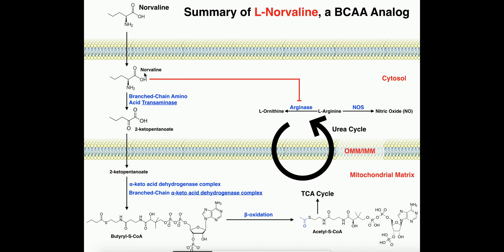That's the rationale for taking a norvaline supplement. It's less about catabolism, even though it can be used to produce energy. Norvaline's major use as an ergogenic aid is inhibition of arginase, which preserves arginine and makes more available for nitric oxide production. Nitric oxide is a potent vasodilator that will increase blood flow to skeletal muscle during exercise. So this is really a summary of norvaline's two major functions: energy production as a minor role, and arginase inhibition for arginine conservation and nitric oxide production as the major function.